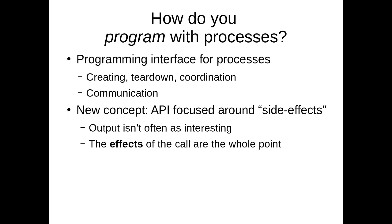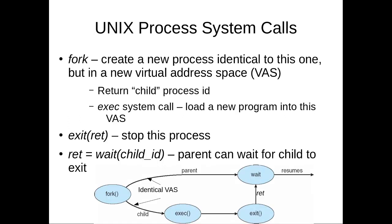We're going to be looking at different APIs for creating processes, tearing them down, and coordinating between processes. Next class, we'll dive into communicating between processes. The core process system calls include fork, exec, exit, and wait, and these define a lot of the entire life cycle of a process.